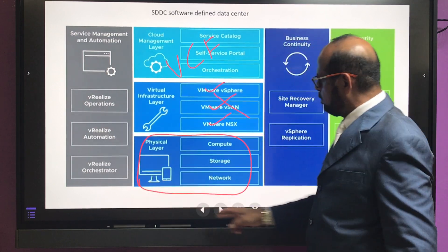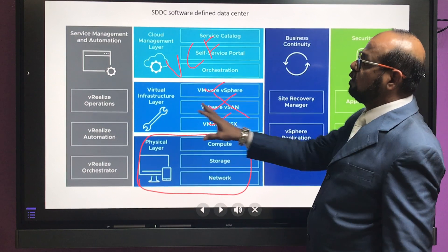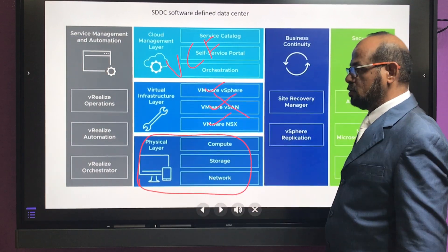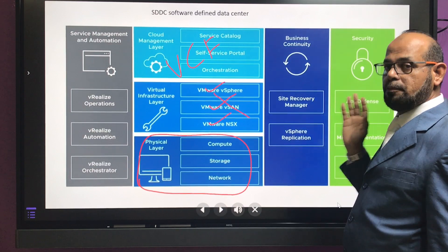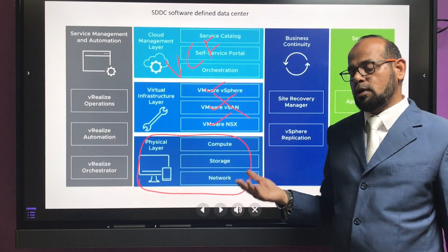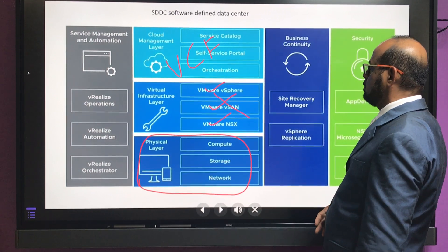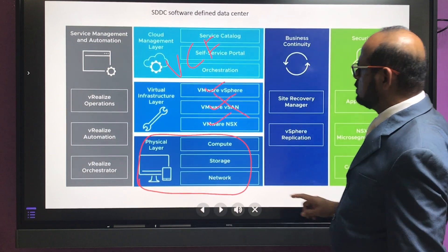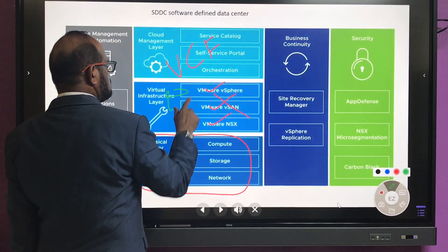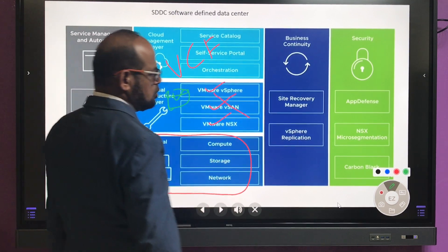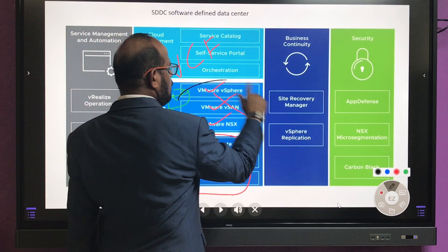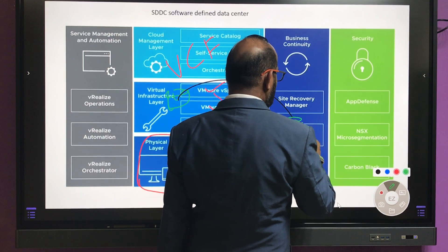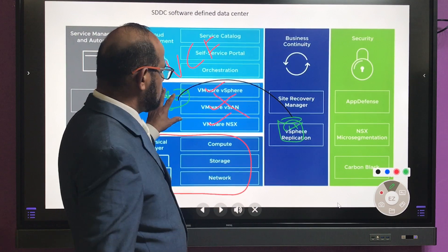There is also VMware Cloud Foundation, which is an all-in-one solution. When running a huge setup, you focus on business continuity. If your setup goes down, you need to bring up another site as soon as possible — this relates to RPO (Recovery Point Objective) and RTO (Recovery Time Objective). For this you need vSphere Replication, which replicates the VM running on your primary site to the other site.